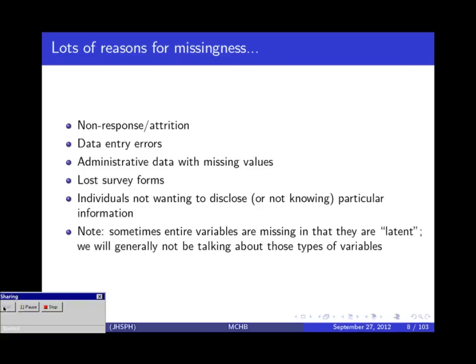Before getting into the methods, the most important thing to think about when you have missing data is what led to that missing data — what was the mechanism by which some values were missing and some were observed. In practical terms, there might be attrition where some people move and you just can't find them anymore, or maybe they go to jail, or death — another reason you might have unit nonresponse or attrition.